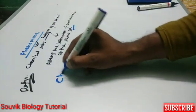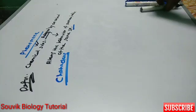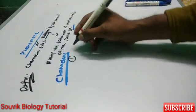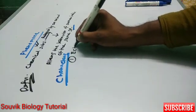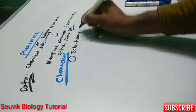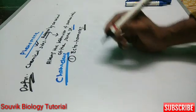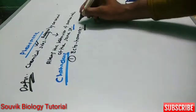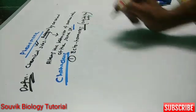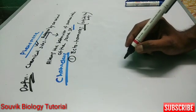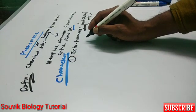Now, what are the characteristics of the pheromone? First, pheromones are also known as ectohormones. Why called ectohormones? Because they are secreted outside the body, and they influence the behavior of another individual of the same species.